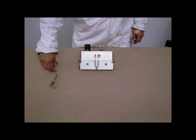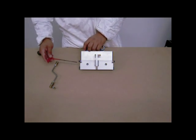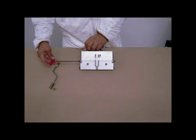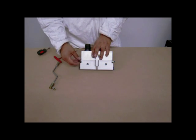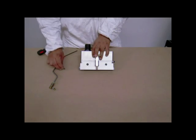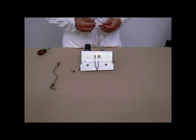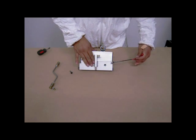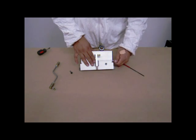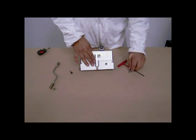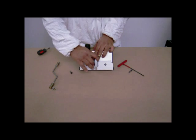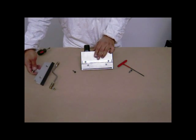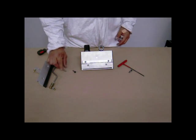To begin, remove the actuating linkage from the door lever. Next, using an Allen wrench, remove the shoulder bolts at each end of the door. When removing the door, be sure to secure the door spring as it may fall away.